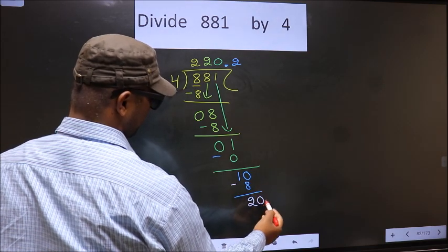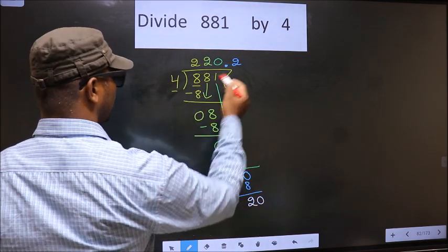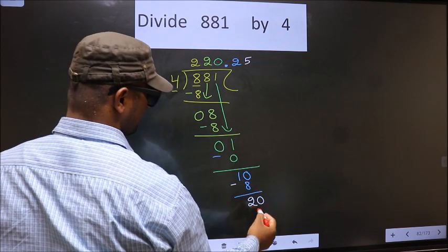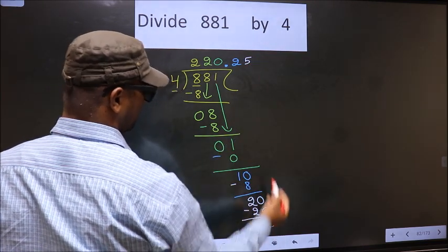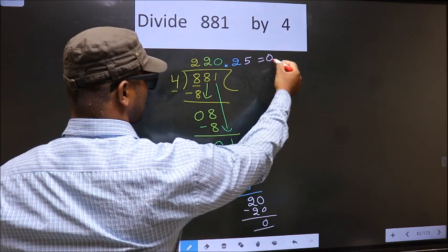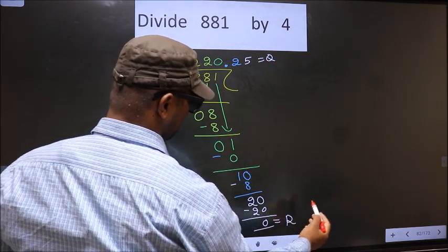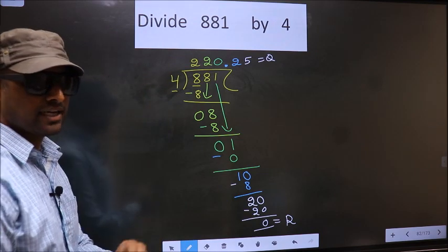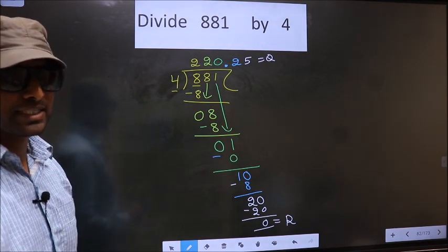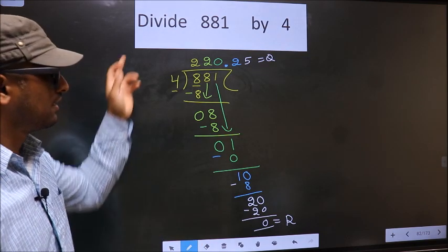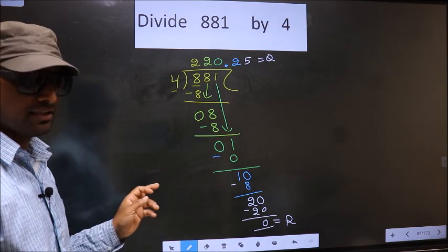We already have decimal take 0. When do we get 20 in 4 table? 4 times 5 is 20. So you subtract you get 0. This is our quotient and this is our remainder. Did you understand where the mistake happens? You should not do that mistake. Am I clear?